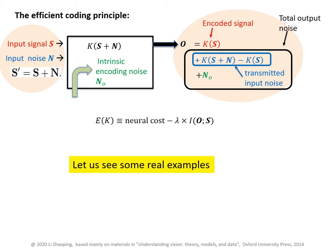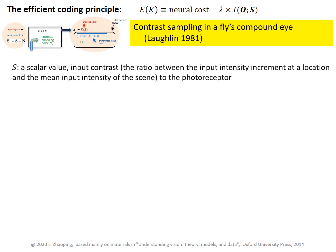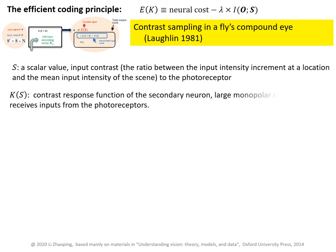Let's see some real examples. This is for contrast sampling in a fly's compound eye. Here, S is a scalar value for input contrast to the photoreceptor, Ks is the contrast response function for the downstream neuron — a large monopolar cell.